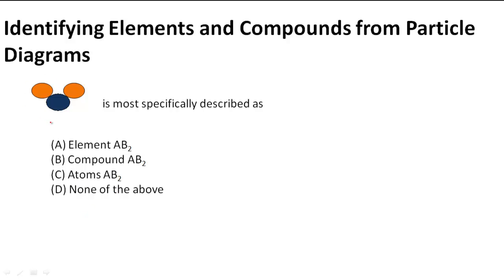So taking a look at this, we have an atom of A here and an atom of B and an atom of B. So in a particle diagram, when atoms are very close together and they seem attached together, that is a representation of how they are chemically combined.